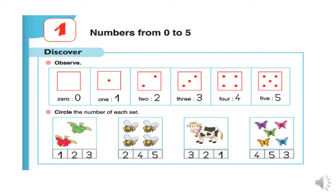How many dots do we have here? One, two, three, four, five. This is number five in words and five in numbers.